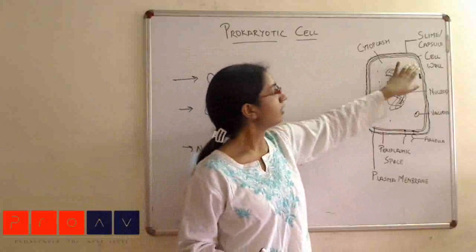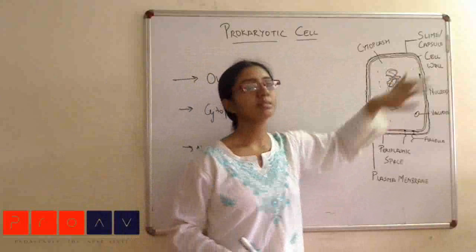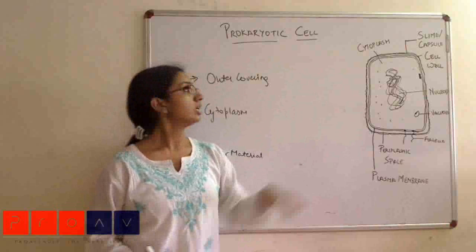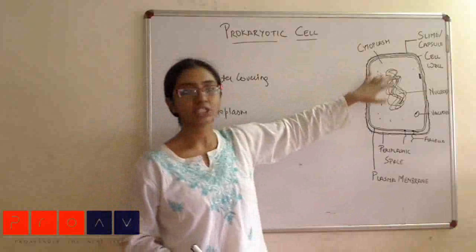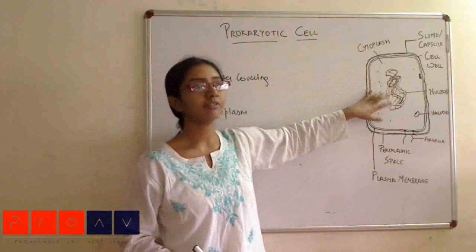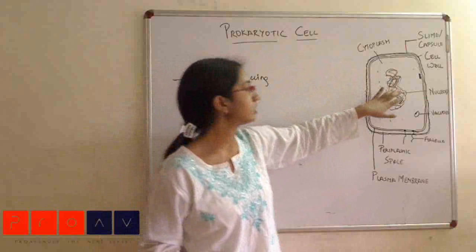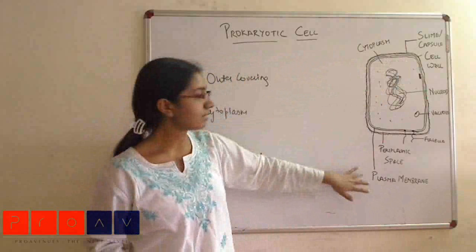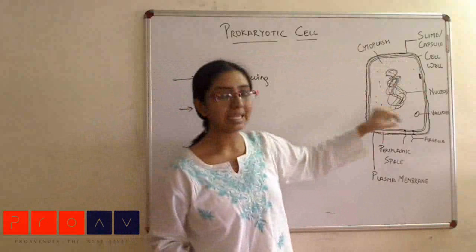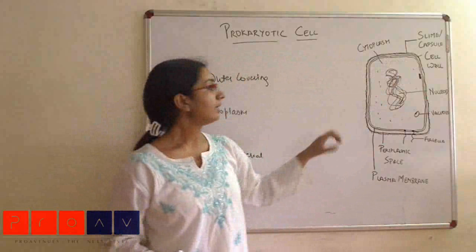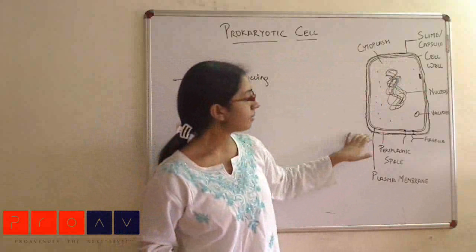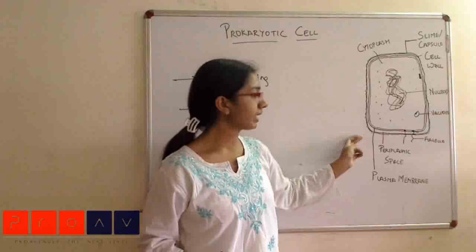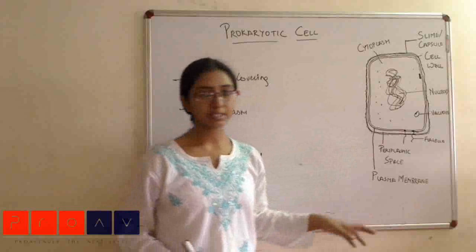Inside the capsule, we have the cell wall, which provides basic protection as well as shape and structure to the cell. Inside the cell wall, there is a plasma membrane, which is a bilayer. Between the plasma membrane and the cell wall, we have a space called the periplasmic space.